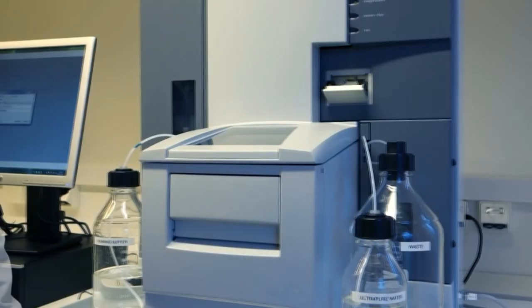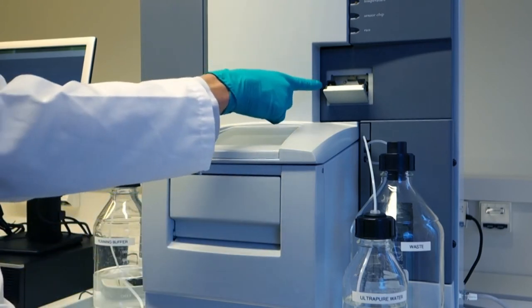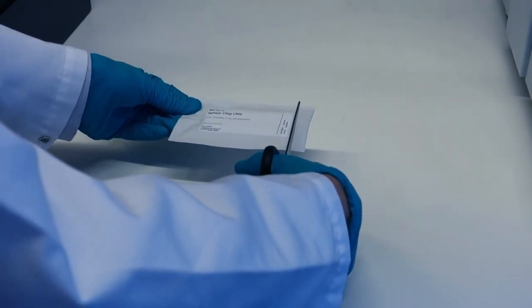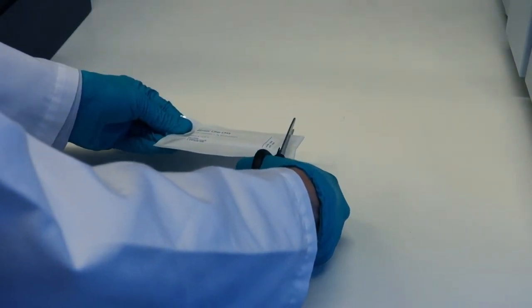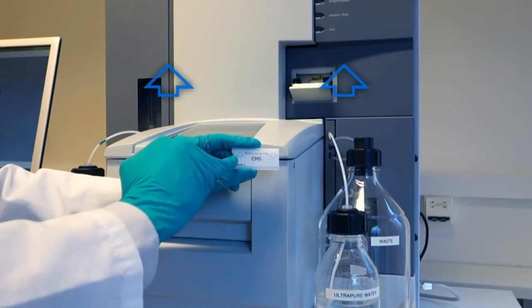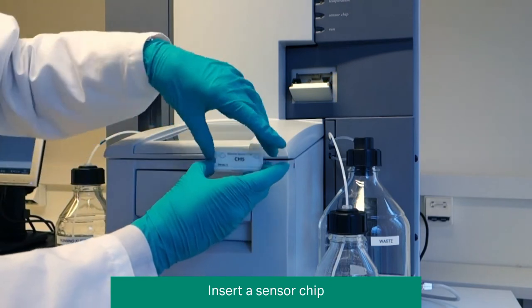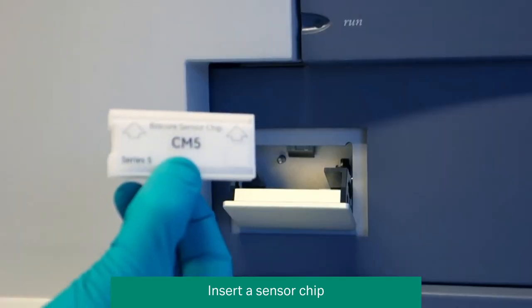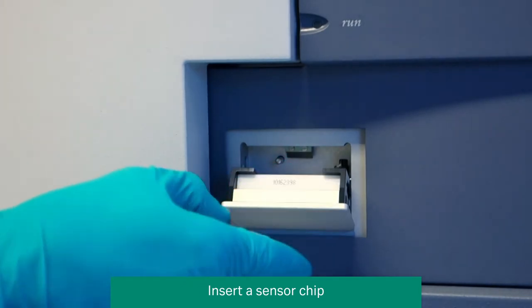If there is not a sensor chip in the instrument, the sensor chip port opens automatically on starting the Biacore T200. Remove the chip from its packaging envelope using scissors to cut off one side. Notice the two arrows shown on the front of the chip should point towards the instrument. Make sure the chip is properly inserted and close the sensor chip port by gently pressing until it clicks into position.